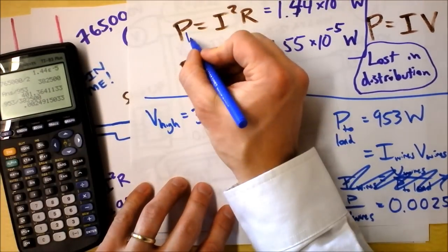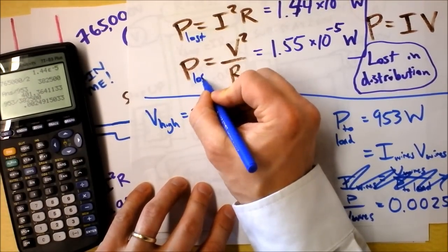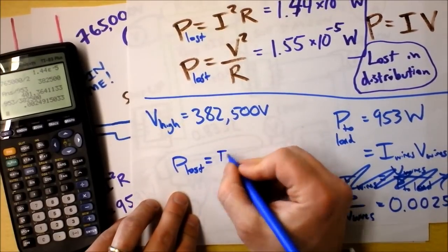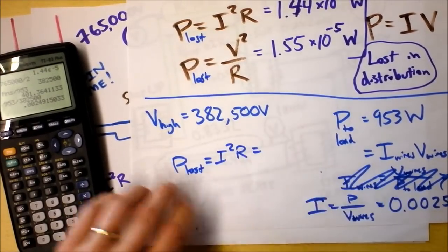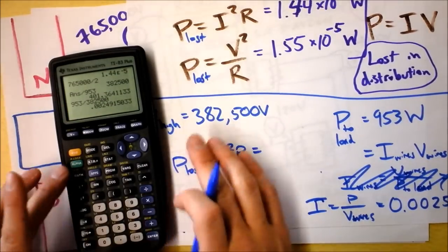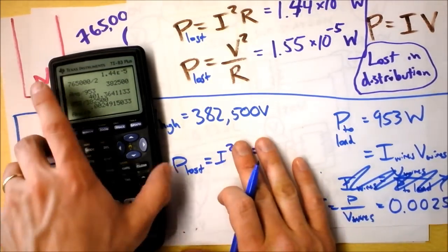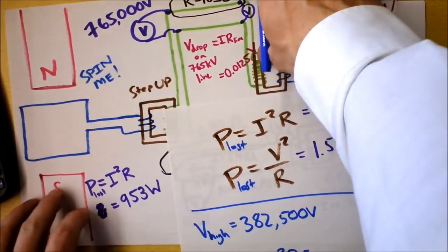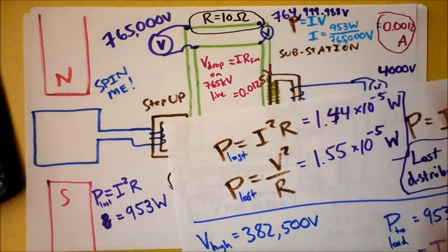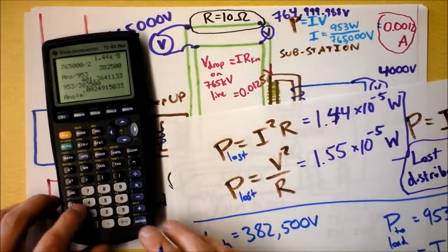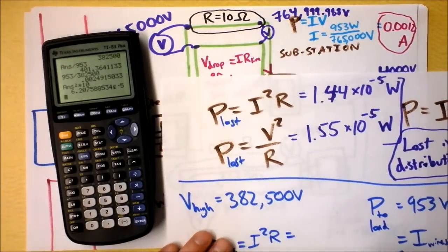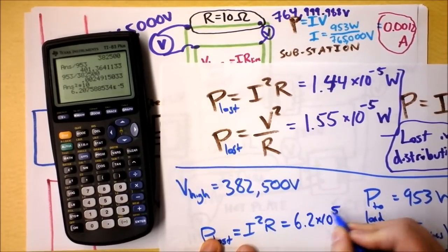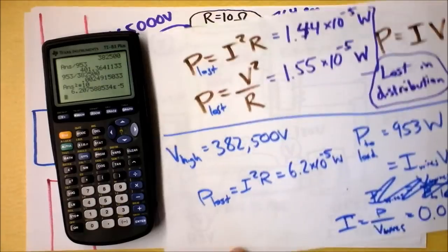That means my power lost, remember these were equations of power lost, we got I squared times R. We'll take that current right there and square it and multiply it by the resistance, which is 10 ohms. And that power loss is, whoa, that's a lot bigger, 6.2 times 10 to the negative fifth watts.